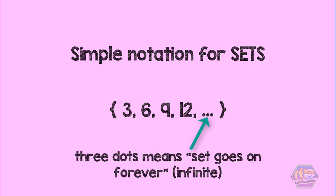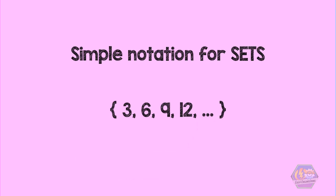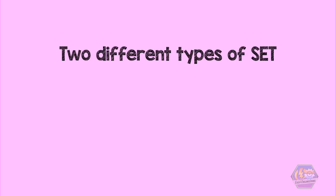The three dots mean that the set goes on forever or this example is an infinite set. Speaking of infinite sets, did you know that a set has two different types? That's right. A set can either be a finite set and an infinite set.